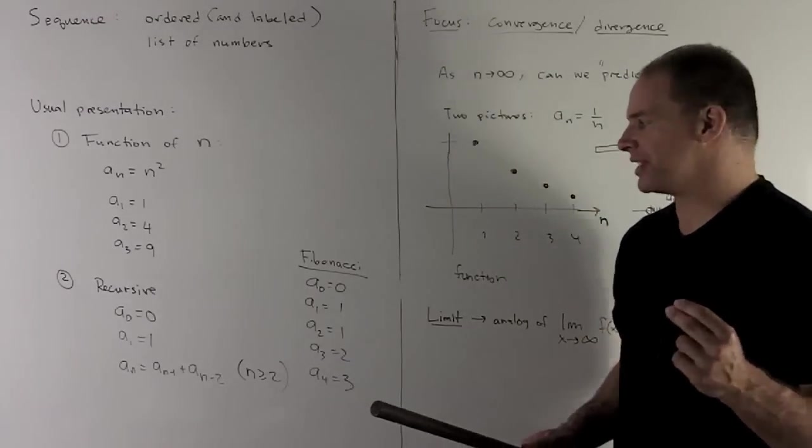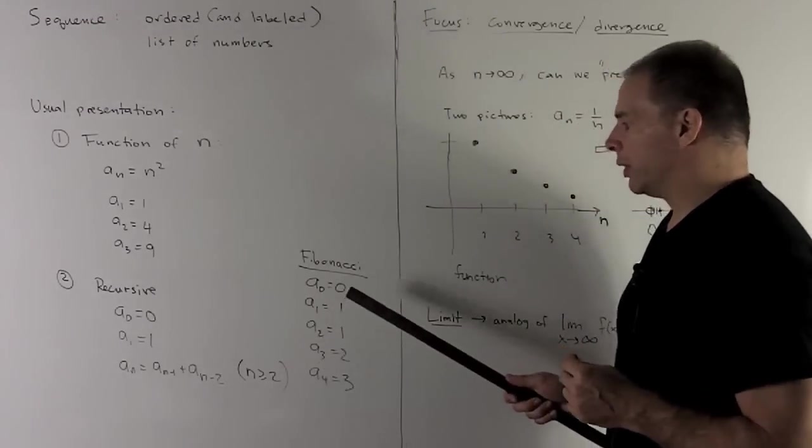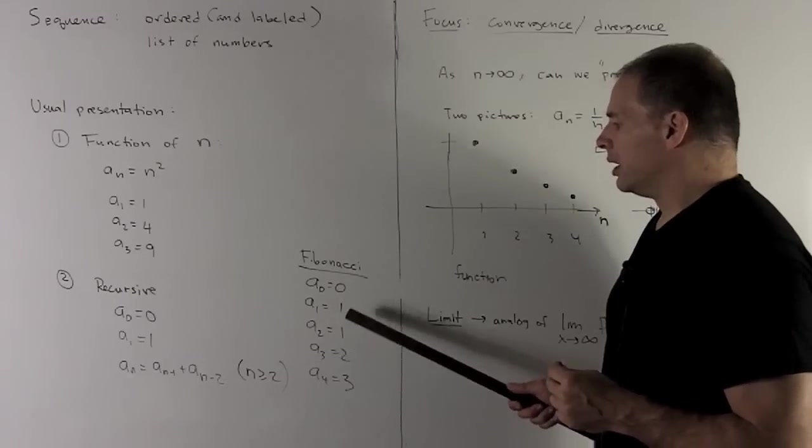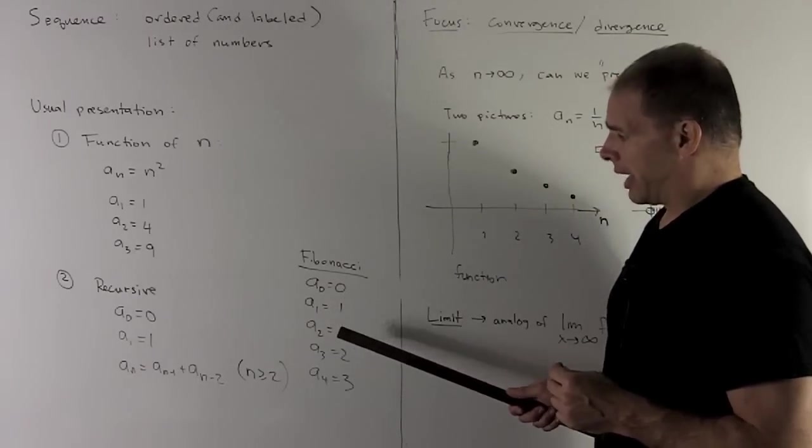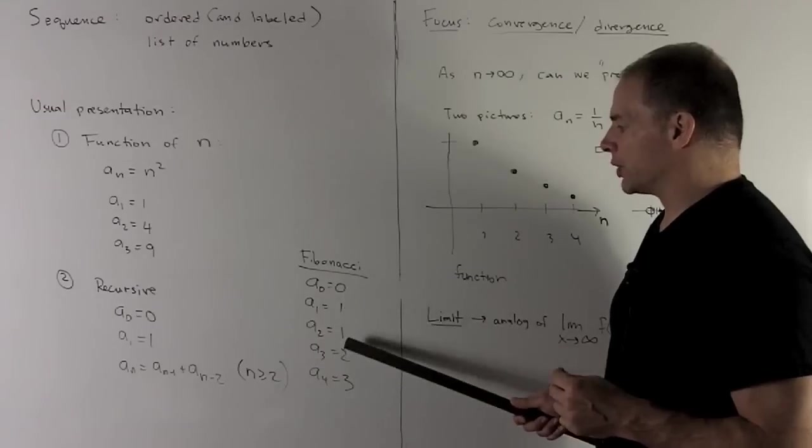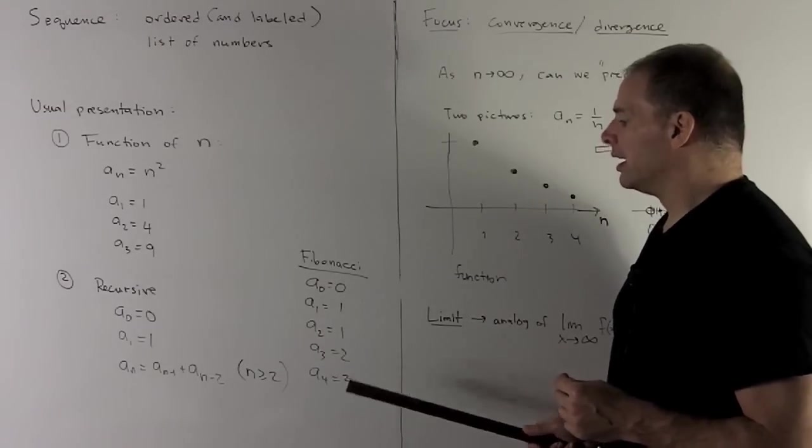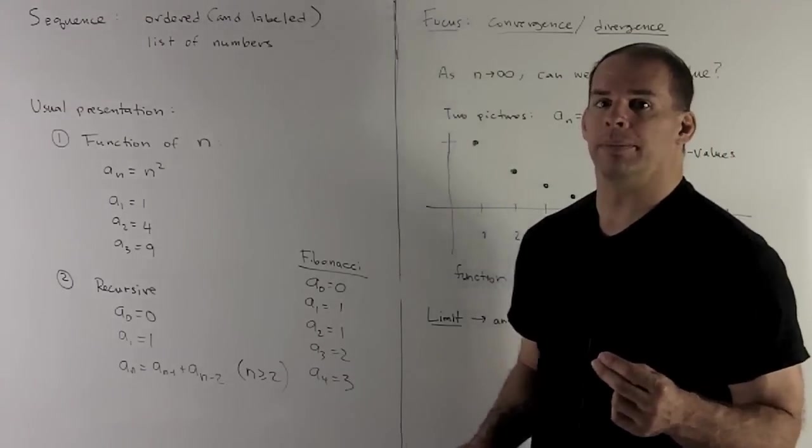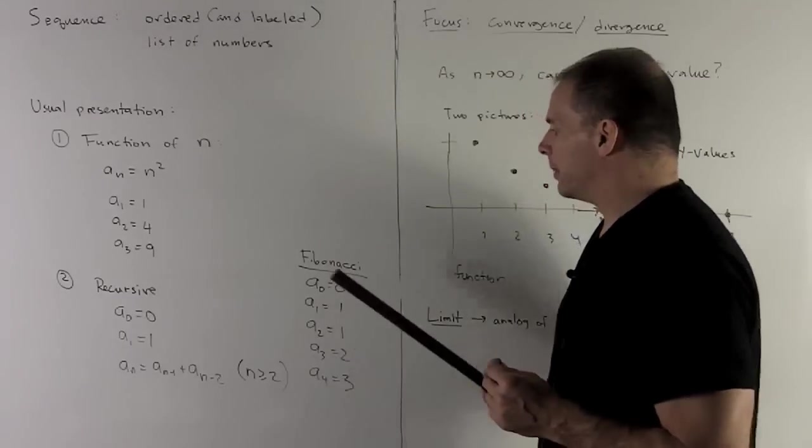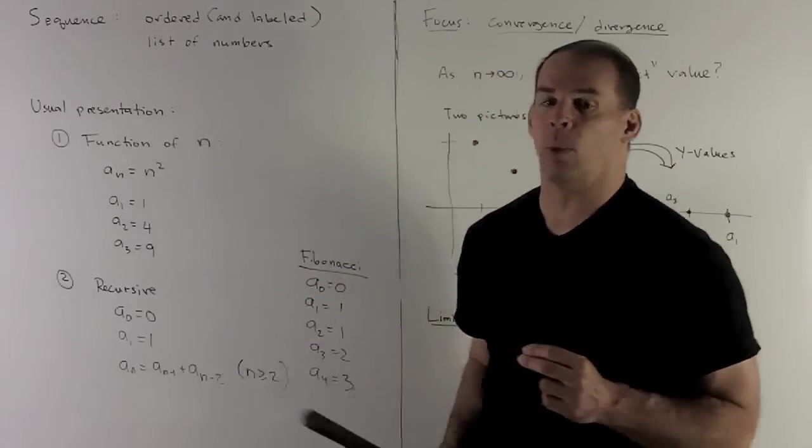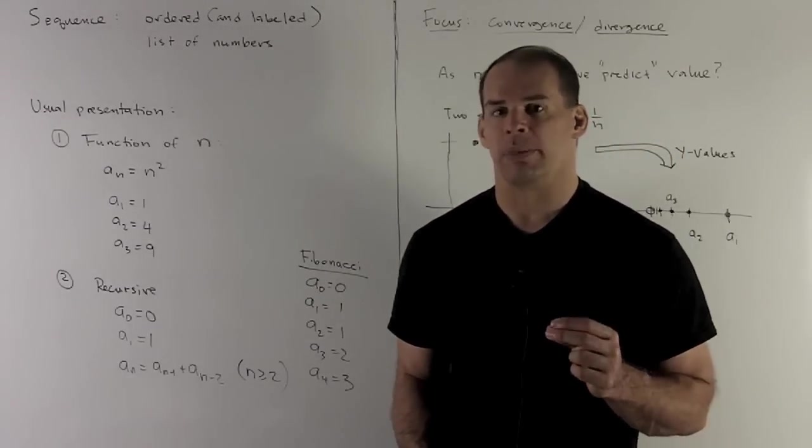As an example, the famous one is the Fibonacci sequence. What do we do? We start with our 0 and 1, and the rule is add the two before it. So second element of the sequence will be 0 plus 1 is 1, next one will be 1 plus 1 is 2, 1 plus 2 is 3, so on and so on. Now, it actually turns out Fibonacci sequence can be defined by a function like we see in 1, but that's a little bit beyond the scope of what we're doing here.